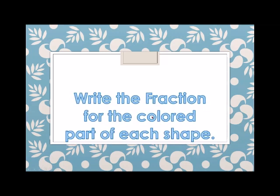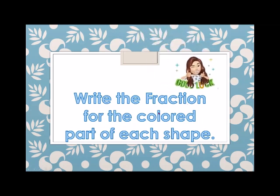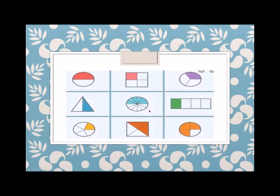Next is: write the fraction for the colored parts of the shape. Given the shape with a shaded part, you have to give the fraction of the figure. For example, this circle — how many shaded? 1. So the number on top is 1, over how many parts? 1 and 2. So this is 1 over 2.